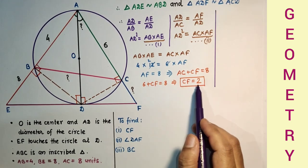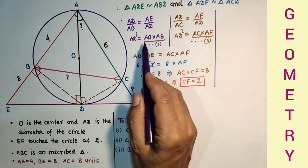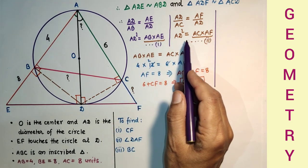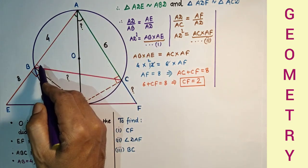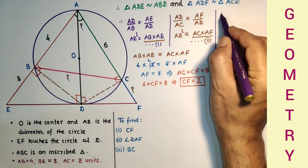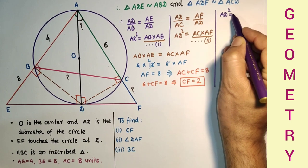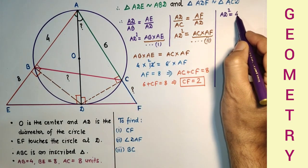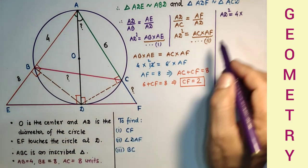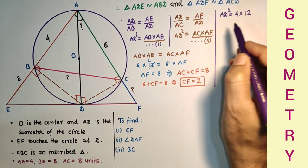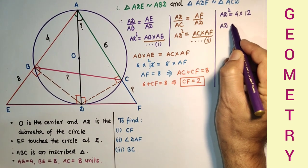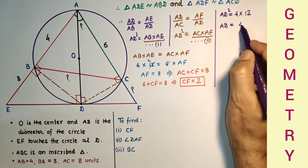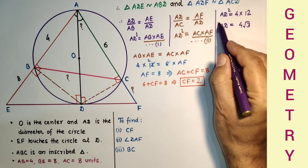After getting CF as 2, we can find AD². AD² is equal to AB×AE, so AB is 4, AE is 12, so AD² = 48. Therefore AD equals square root of 48, which is 4√3.